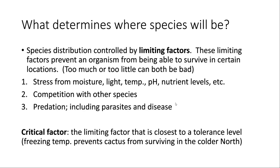With limiting factors, some like predation — just being hunted — are always a concern. When it comes to things like moisture, especially for plants, they typically have a range of conditions they can grow in, and outside those conditions they can't survive. For example, the textbook talks about a cactus that can withstand many poor environmental conditions, but one thing it can't survive is low temperatures. Limiting factors are factors that make it difficult or impossible for an organism to survive in a location.